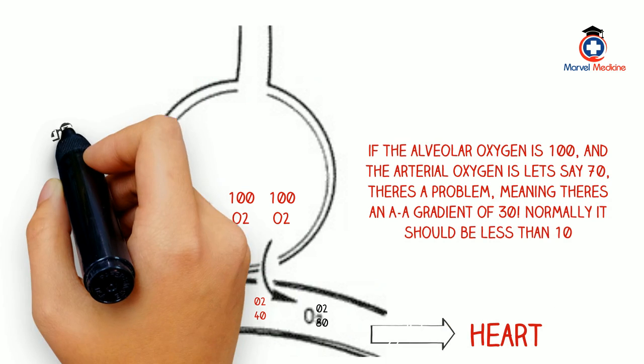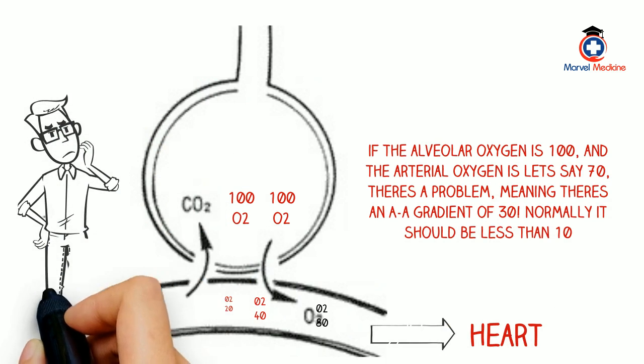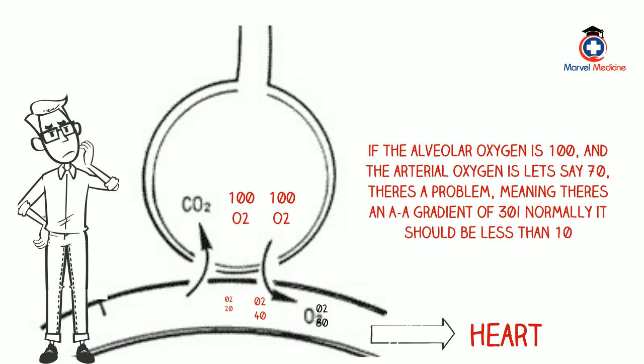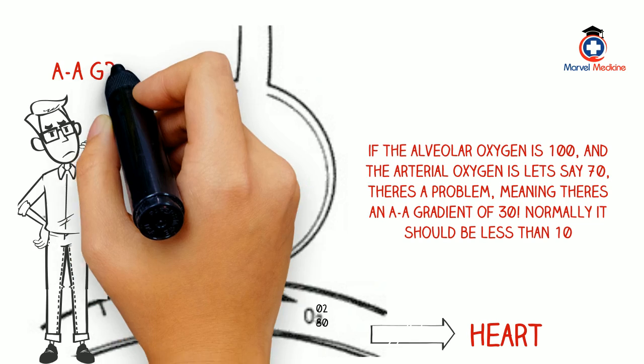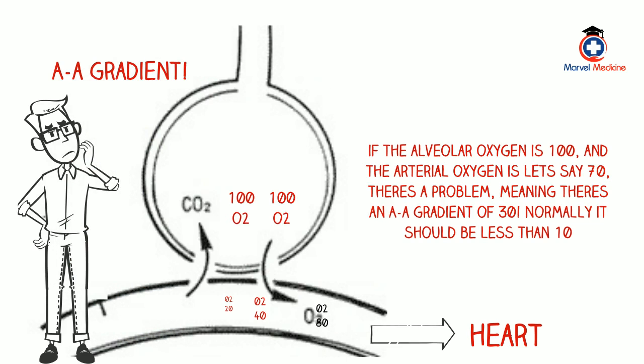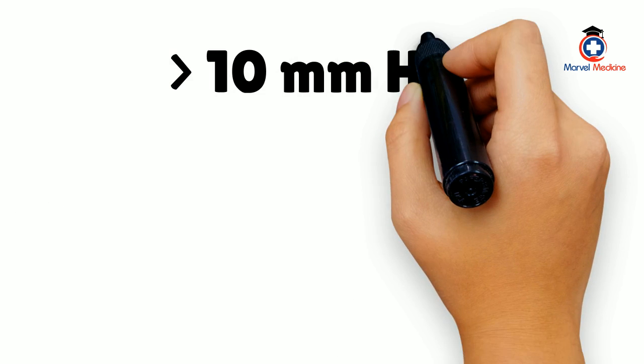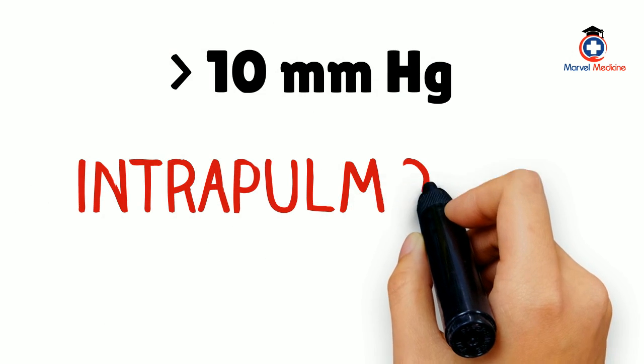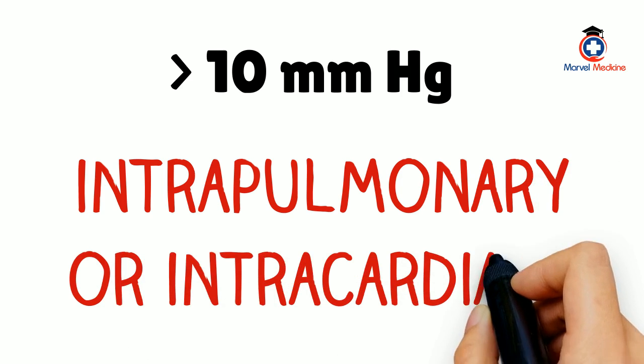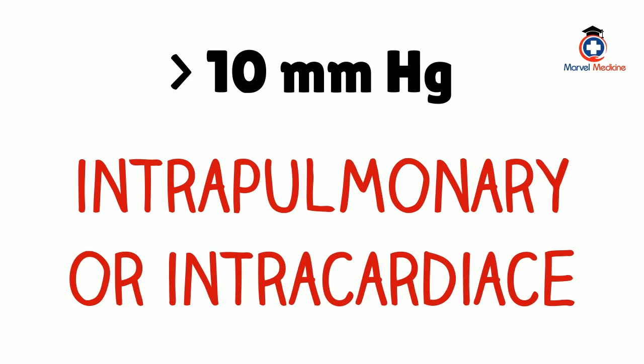I can totally see questions on the USMLE that give you a bunch of numbers, including the alveolar oxygen, and they sneak in the arterial oxygen level. Alongside that, they'll give you a long vignette story with vitals, this, that. Then they'll ask you what the diagnosis is, and you'll think, I have no idea. What they want you to do is recognize that you have the tools to calculate the AA gradient. They will make sure to give you obvious numbers, and it'll definitely be above 10. At that point, what I want you to do is pick the answer choice that has anything to do with shunting, whether it's intrapulmonary or intercardiac. They won't give you both.